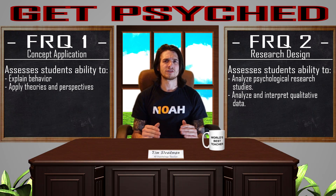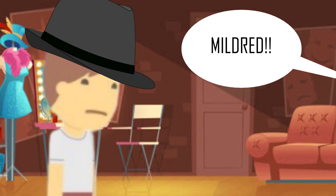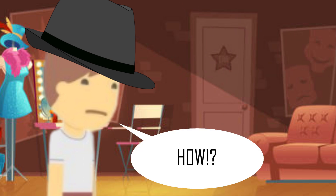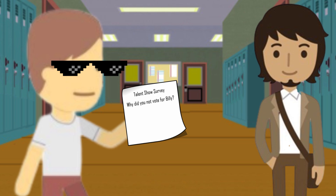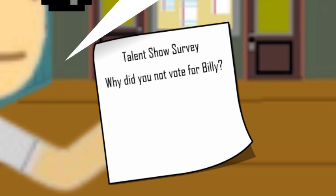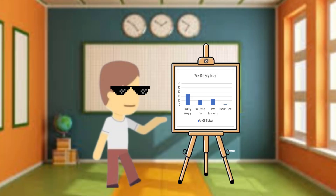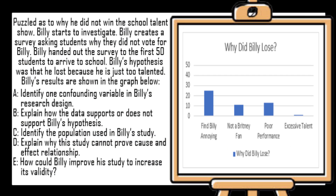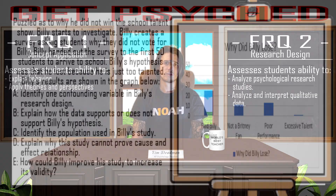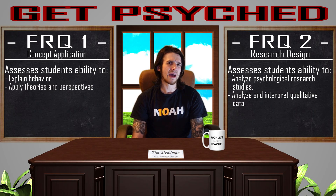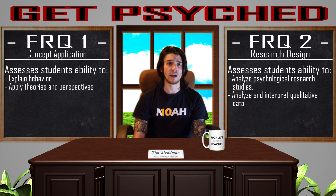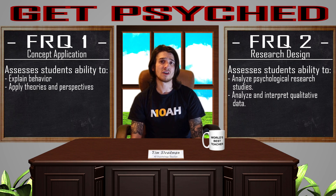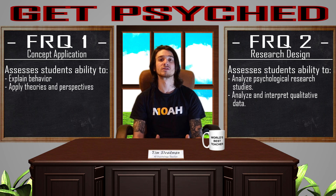Let's take a look at an example research design FRQ. Unfortunately for Billy, he did not win the school talent show. Absolutely puzzled, he decides to investigate by handing out a survey to the first 50 students who walk into school, asking why they did not vote for him to win. At the end of the day, Billy collected all the data and displayed it on a graph. This FRQ has a similar setup as FRQ 1, but these questions focus on your knowledge and application of how research is conducted and other important components of psychological research.